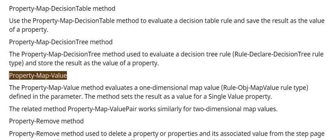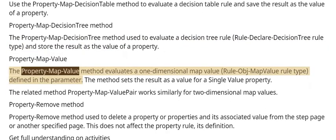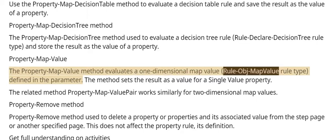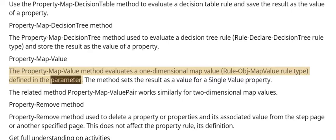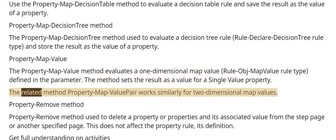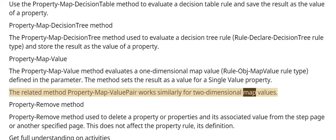The Property Map Value method evaluates a one-dimensional map value rule of the Map Value rule type, defined in the parameter. The method sets the result as a value for a single value property. The related method, Property Map Value Pair, works similarly for two-dimensional map values.